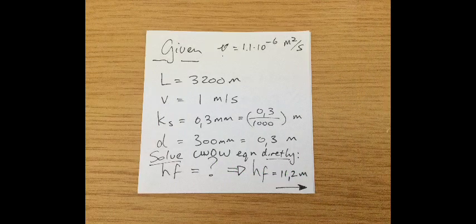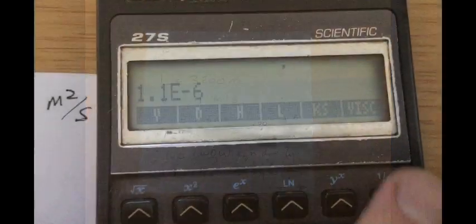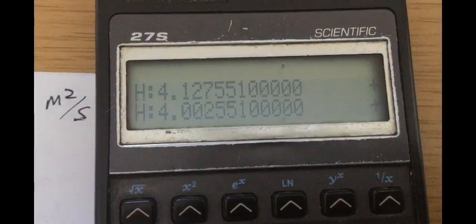So let's try another example where we have velocity given instead of q. We can use the direct solution and we find hf equals 11.2 meters.